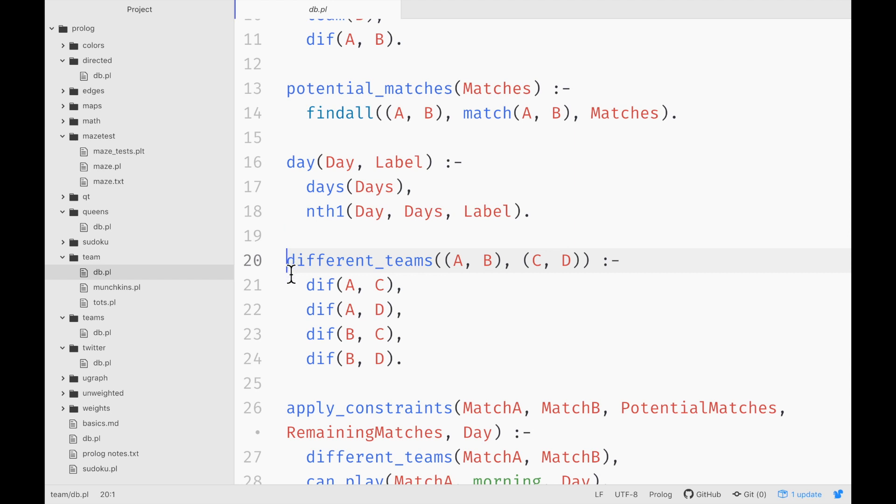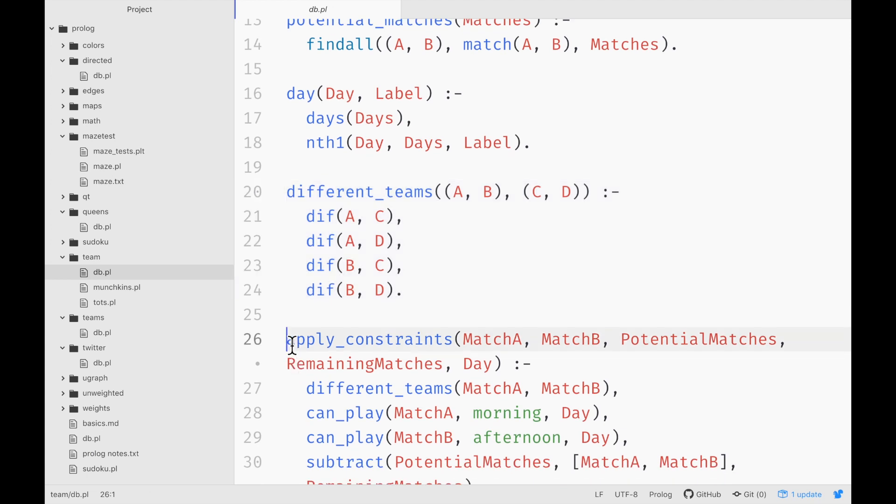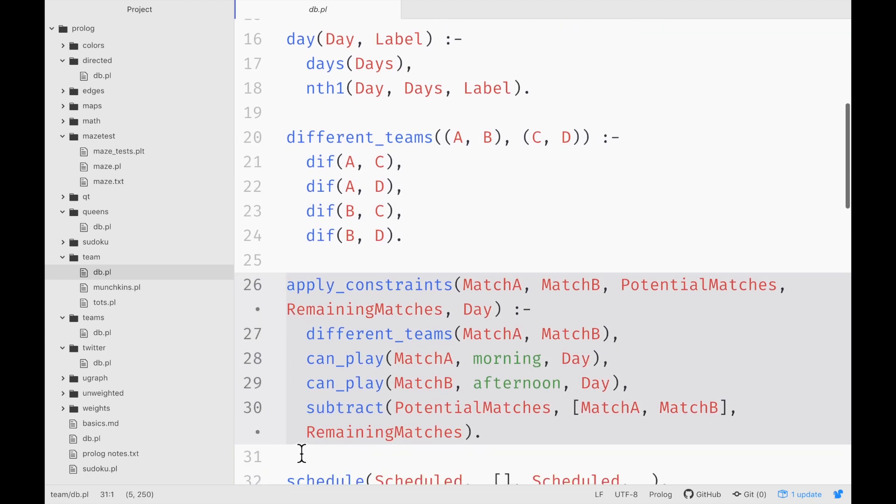And then we make sure that games across the same day have different teams. And we can even apply constraints. And let's look at what some of the constraints might look like.